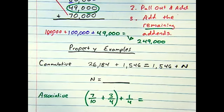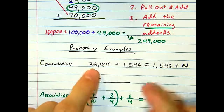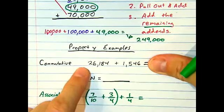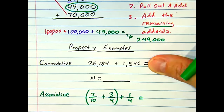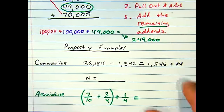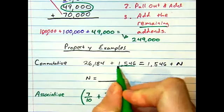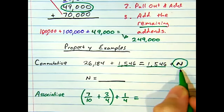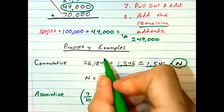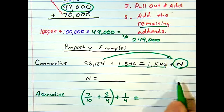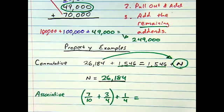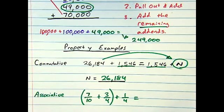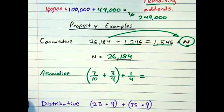Commutative. Pretty simple problem right here. Let's look at half of the problem. 26,184 plus 1,546. The other side of the problem, I see this number is repeated and missing the other addend. What is it? This is almost like a matching puzzle when you see problems like this using the commutative property of addition.